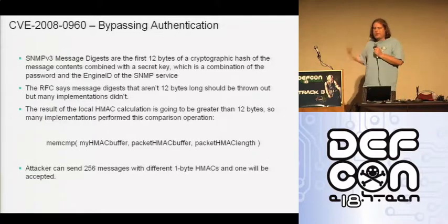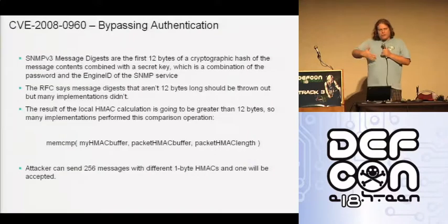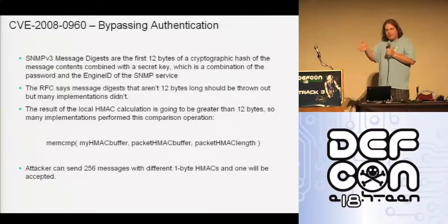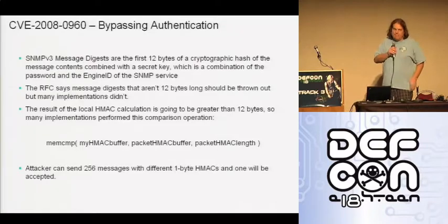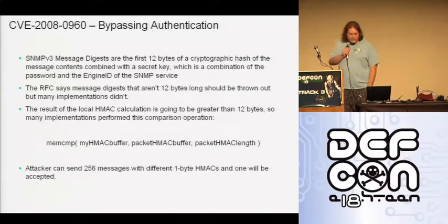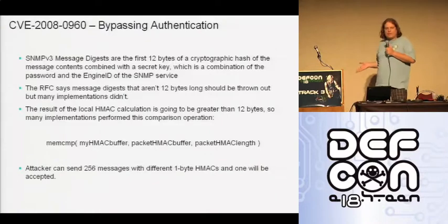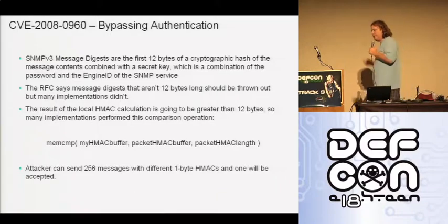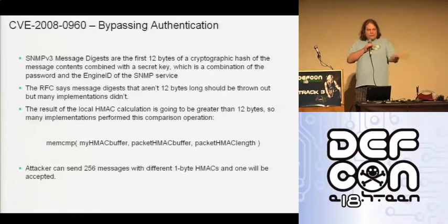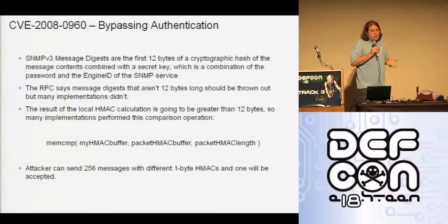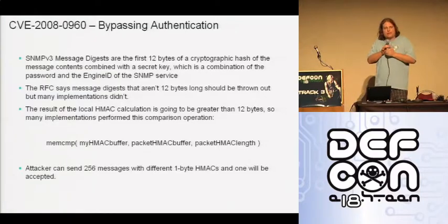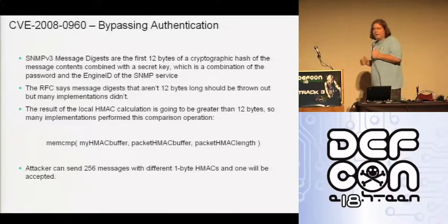When a router receives an SNMP v3 request, the way the RFC is written, it's supposed to take that HMAC out and check to make sure it's 12 bytes long. If it's not 12 bytes long, it throws the HMAC away and discards the packet. If it is 12 bytes long, it proceeds to verification. It turns out that particular piece of code was not actually implemented by a bunch of different SNMP v3 implementations — so regardless of how long the HMAC was, the software would proceed to the verification step. That function would calculate its own HMAC and then compare it with the HMAC in the packet using the length from the packet. So if you send one byte as your HMAC and that one byte happens to be the correct first byte, your packet is accepted as valid.